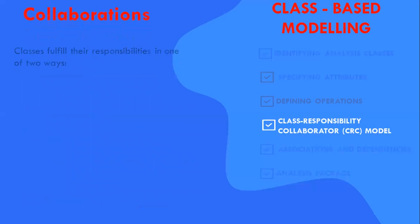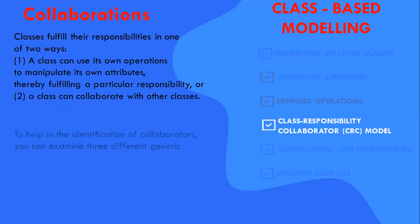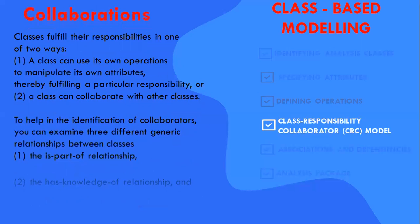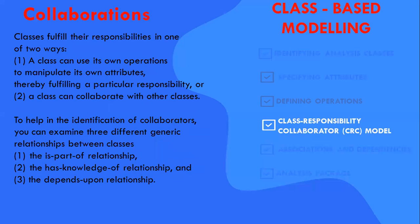Collaborations. A class fulfills their responsibilities in one of two ways. One is, a class can use its own operations to manipulate its own attributes, thereby fulfilling a particular responsibility. Or, a class can collaborate with other classes. To help the identification of collaborators, we have to examine different generic relationships between the classes. That is, part of relationship, has knowledge of relationship, and depends upon relationship.